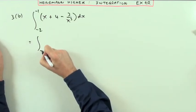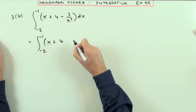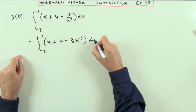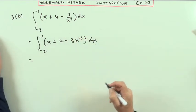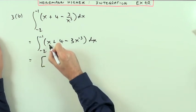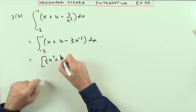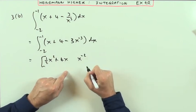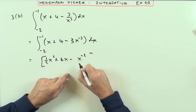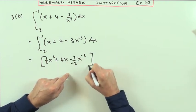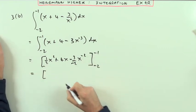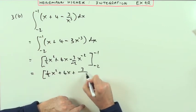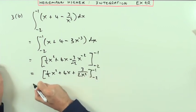Now part b — integrating from negative 2 to negative 1. x is fine, 4 is fine, but that x cubed in the denominator needs to come up top, so it becomes x to the negative 3. Now they're all ready. Power goes from 1 up to 2, divide by 2; the constant goes back to linear; negative 3 adds 1 to get negative 2, divide by negative 2. So we have a half of x squared plus 4x plus 3 over 2x squared.